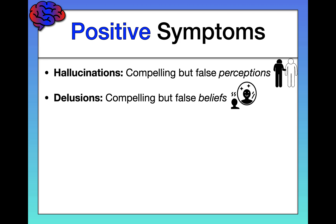We also have delusions, which are commonly mistaken for hallucinations. These are subjectively compelling but false beliefs. There are multiple types: first, paranoid delusions, which involve the false belief that other people or agencies are trying to harm you — like you believe the FBI is after you. Second, grandiose delusions — beliefs that you hold some kind of special power, unique knowledge, or are extremely important, like thinking you're the messiah.